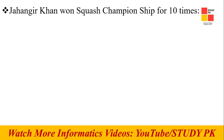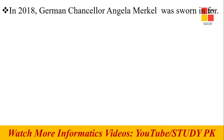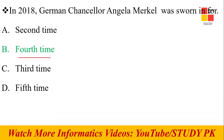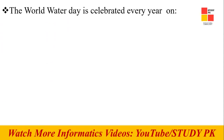Next question: Jahangir Khan won the squash championship how many times in the British Open? The right answer is 10 times. Next question: In 2018, German Chancellor Angela Merkel was sworn in for the fourth time. Next question: World Water Day is celebrated every year on 22nd March.